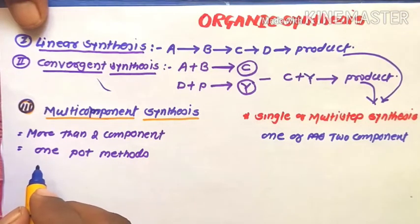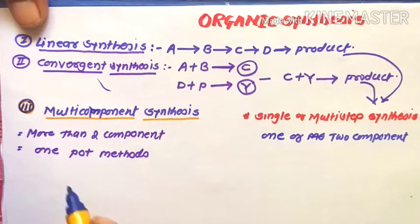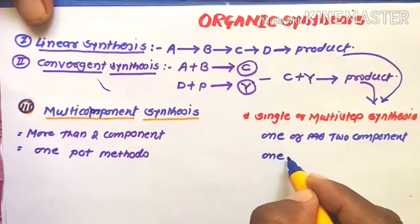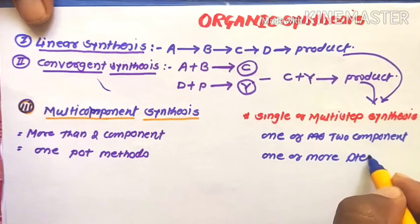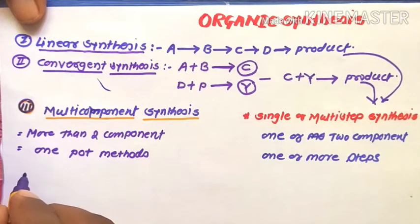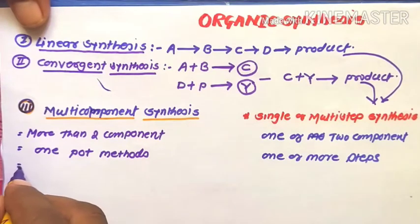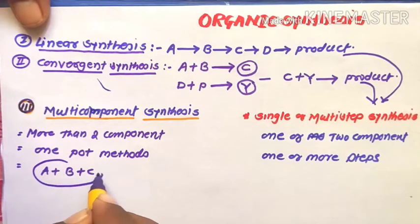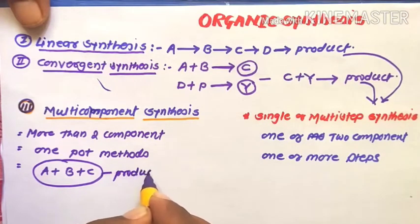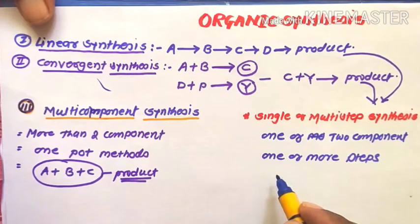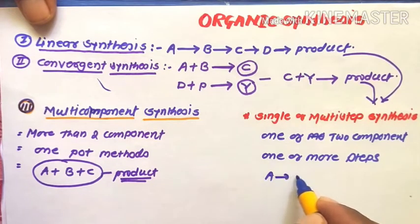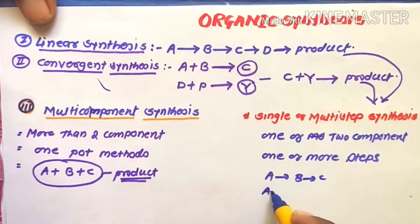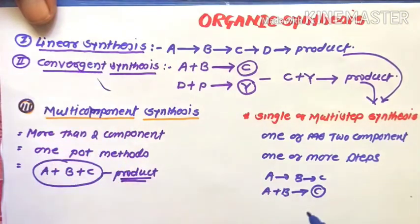In multi-component synthesis, all components react in a single step — a one-pot method — to form product molecules. In single or multi-step synthesis, one or more steps are involved, such as A to B, B to C, as in convergent and linear synthesis, to form the final product.